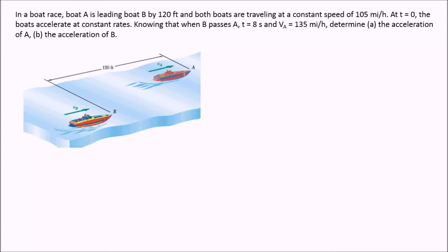The next problem says: in a boat race, boat A is leading boat B by 120 feet, and both boats are traveling at a constant speed of 105 miles per hour. At t equals 0 seconds, the boats accelerate at constant rates. Knowing that when B passes A, the time is 8 seconds and the velocity of A is 135 miles per hour, determine the acceleration of A and the acceleration of B.